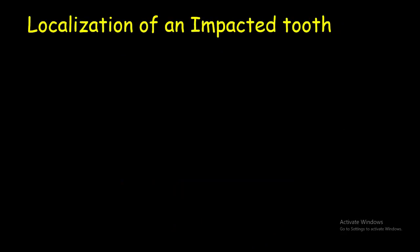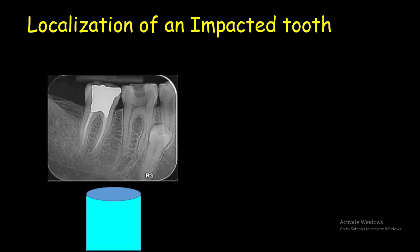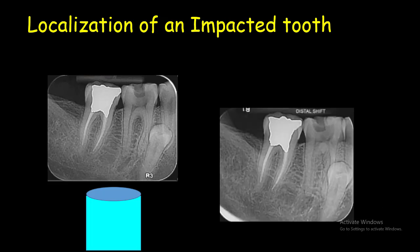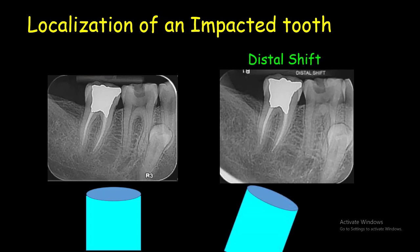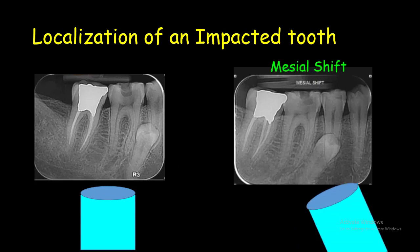Let's use this technique for localization of an impacted tooth. In the first right-angle radiograph, the impacted second mandibular premolar is in the mesial of the first mandibular molar. With a tube shift towards the distal, the impacted second premolar moves distally towards the first molar. Therefore, the impacted premolar is located in the lingual. Localizing again with a mesial shift, the impacted second premolar moves mesially towards the first premolar, confirming it is positioned lingually.